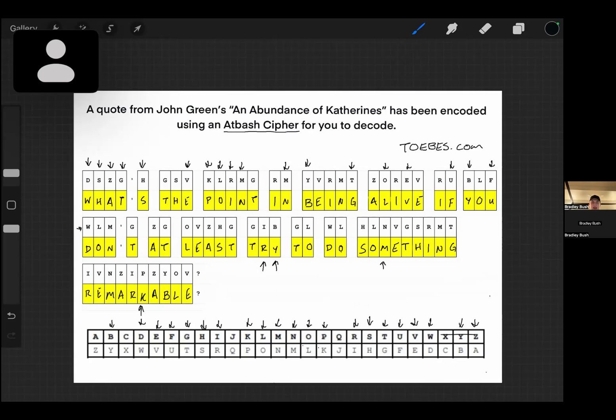If for some reason you don't have this table right here, you can just write out your alphabet ABC dot dot dot XYZ, just imagine that the other letters are there, and then write it backwards and you will have your Atbash table.